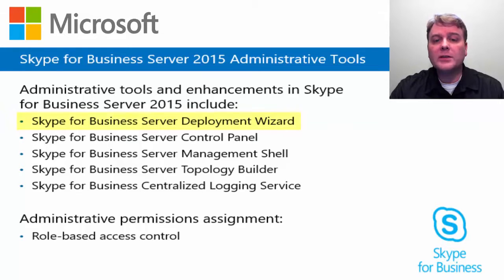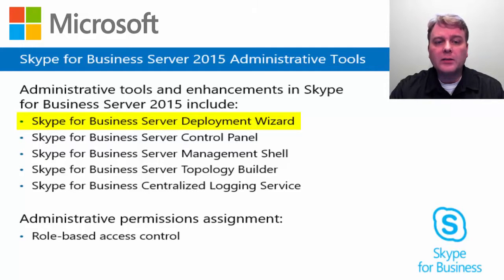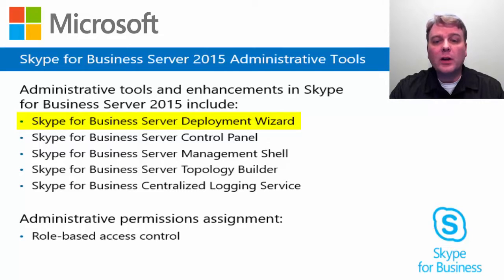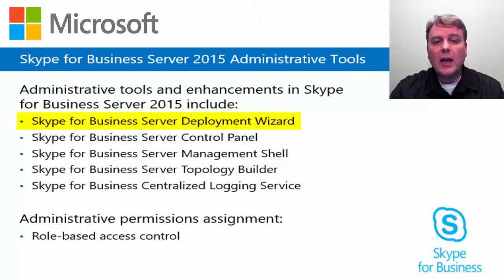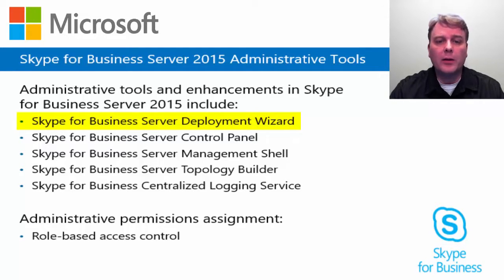First, the Skype for Business Server Deployment Wizard. You must use the Skype for Business Server Deployment Wizard included on the installation media to install all administrative tools onto a computer on which you have not already installed Skype for Business Server. During the administrative tools installation process, the Deployment Wizard is installed locally along with the other tools so that you can later use it to install files for additional components or remove files for components that you do not want on the computer.